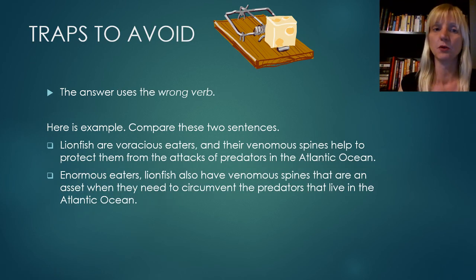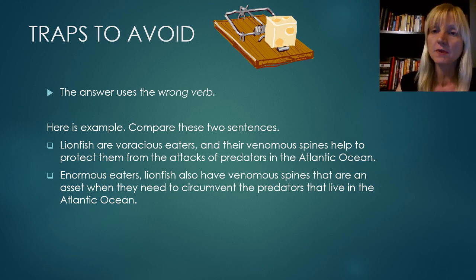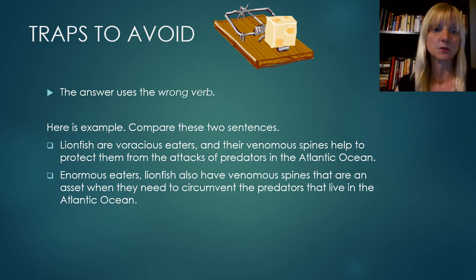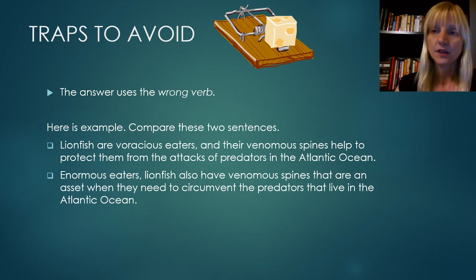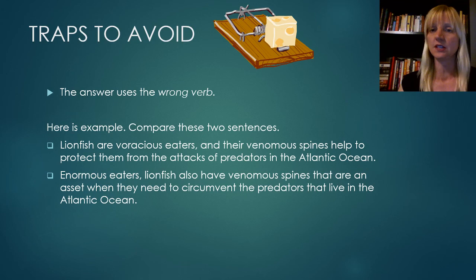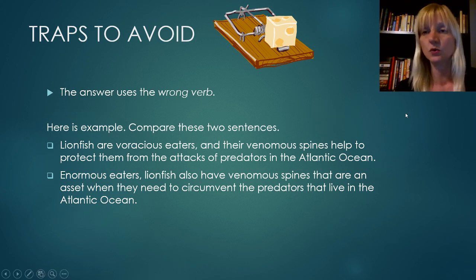Verbs are very important in the TOEFL, and often the ETS will try to trick you by using a verb with a very different meaning. For example: 'Lionfish are voracious eaters, and their venomous spines help to protect them from the attacks of predators in the Atlantic Ocean.' An incorrect choice says lionfish 'circumvent' predators. Protect and circumvent are very different — they are not synonyms. This is very common for the ETS: using the wrong verb in order to trick you. Know your verbs.